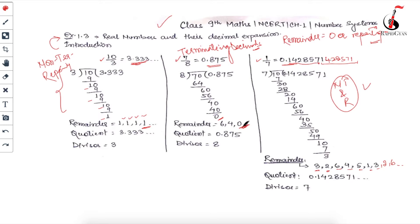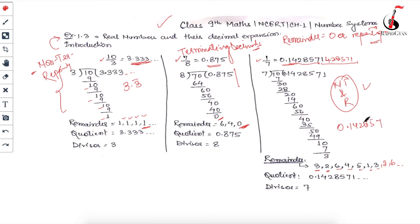If your remainder is zero, you get remainder zero only when the quotient part terminates - so that means it's a terminating decimal. If your remainder is not zero and is repeating - like 1, 1, 1, 1 - then that's non-terminating, and the answer will also repeat. You can see it's 3, 3, 3, 3, which I can write as 3.3̄. Here the answer is 0.142857 with a bar on top, because after that it repeats itself.